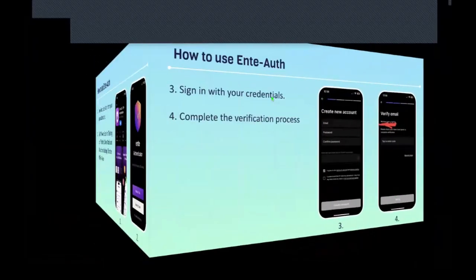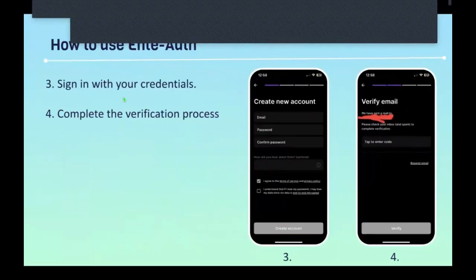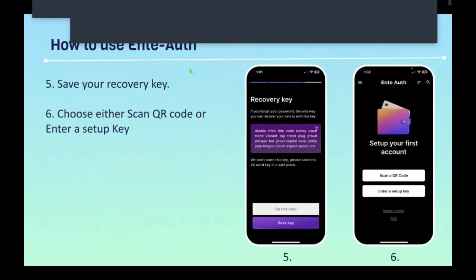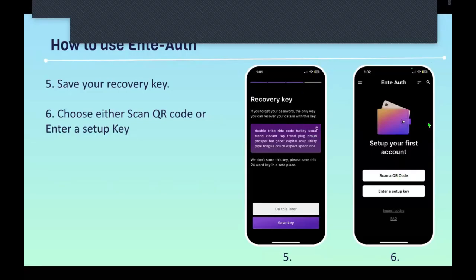Sign in with your credentials, or if you don't have credentials, create them and complete the verification process. Next, you have to save your recovery key — the recovery key is the only way you can recover your data if you forget your password. Then choose either 'Scan QR Code' or 'Enter a Setup Key,' as shown here.